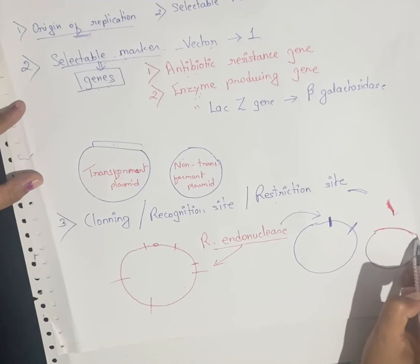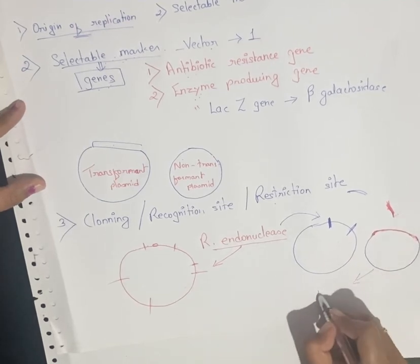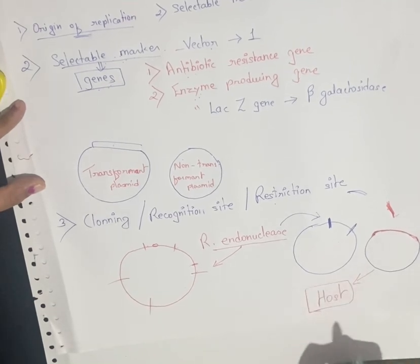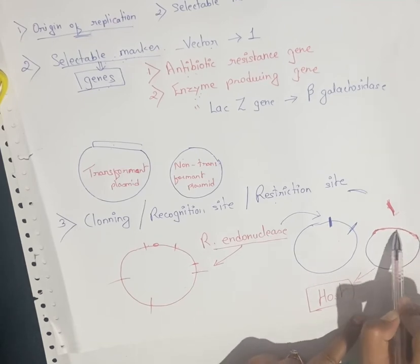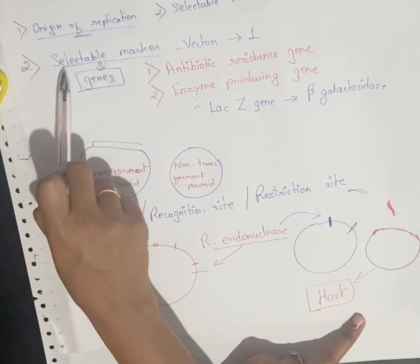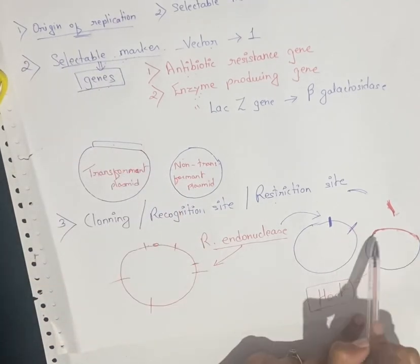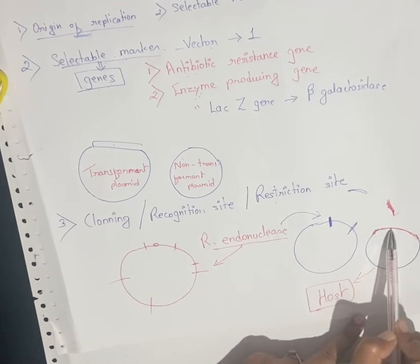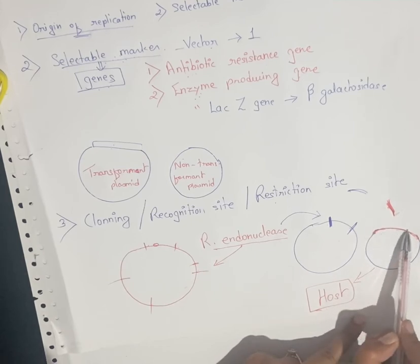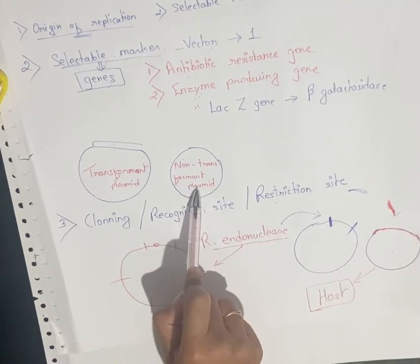After ligation, the recombinant plasmid is formed and the enzyme ligase joins the fragments. This recombinant plasmid can then be introduced into the host organism. However, sometimes when alien DNA is introduced into a plasmid, the plasmid may not accept it, resulting in a non-transformant plasmid.